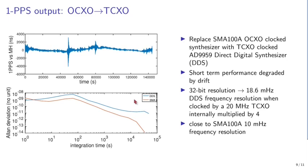Replacing the SMA-100A OCXO with a TCXO — as would be expected in an embedded application — we use a temperature-controlled crystal oscillator clocking an AD9959 direct digital synthesizer. We observe similar performance in the short term, though some long-term fluctuations of the TCXO still need to be controlled by improving the control loop. The 32-bit DDS provides 18 mHz frequency resolution when clocking the AD9959 with a 20 MHz TCXO, which is close to the 10 mHz resolution of the SMA-100A synthesizer.